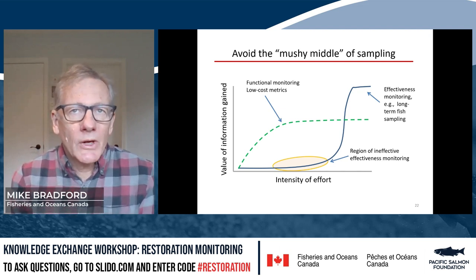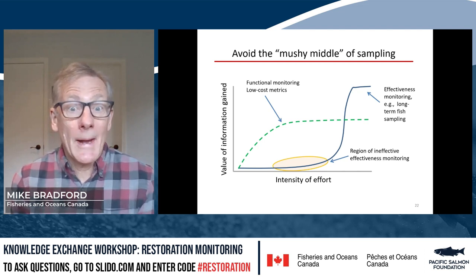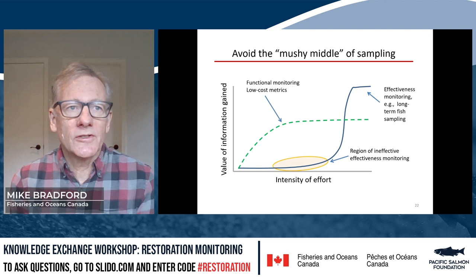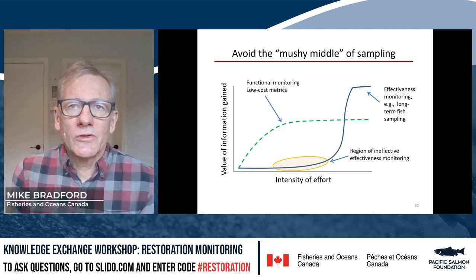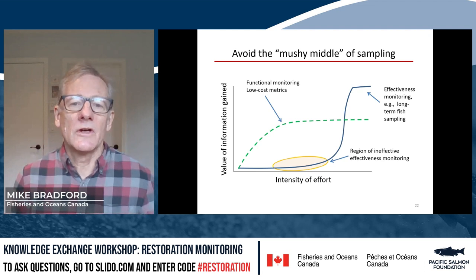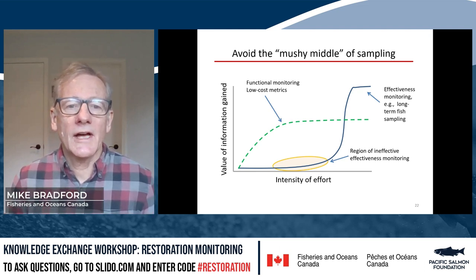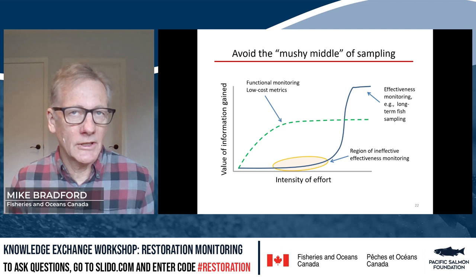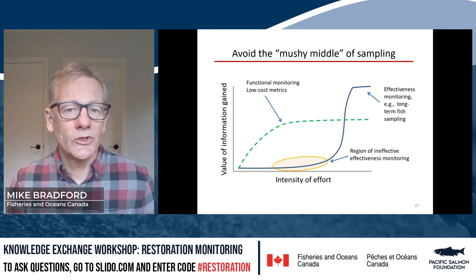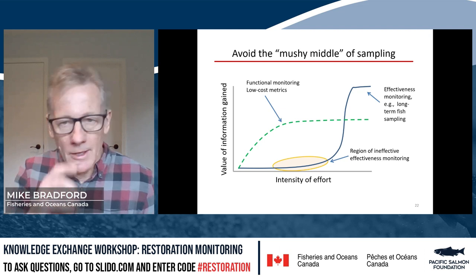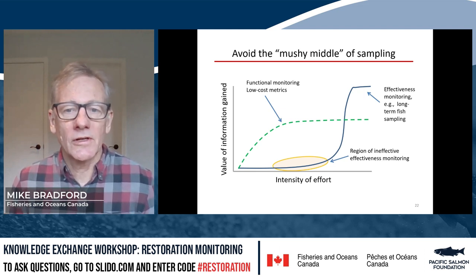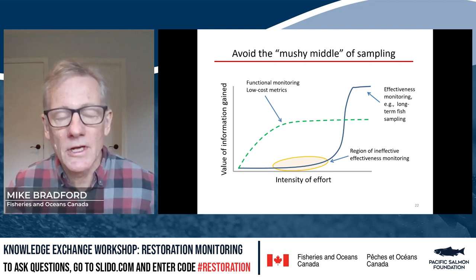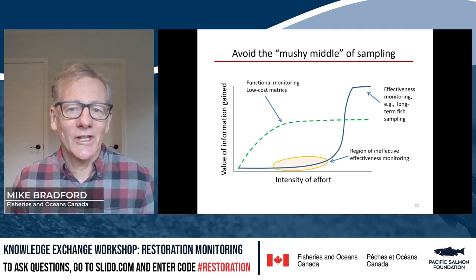What I call the mushy middle of sampling: many habitat monitoring studies yield uninformative results, which is the result of trying to do effectiveness monitoring without putting enough effort into it. Simple functional monitoring gives useful information with modest effort. But if you're going to pursue effectiveness monitoring and don't put the effort in, you just end up with unreliable results. You really do have to put a lot of effort into effectiveness monitoring for it to be useful. Avoid that mushy middle of sampling when thinking about your design.